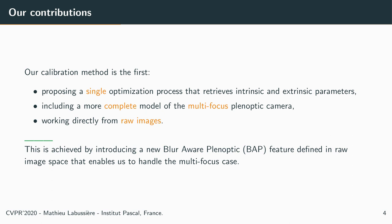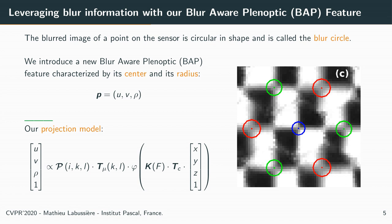This is achieved by introducing a new blur-aware plenoptic feature defined in raw image space that enables us to handle the multi-focus case. Let's introduce our new features. The blur image of a point can be modeled by its blur circle. Leveraging blur information, our new blur-aware plenoptic feature is characterized by its center UV and its radius rho.